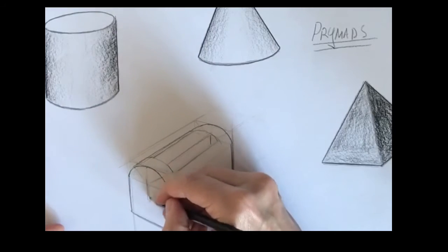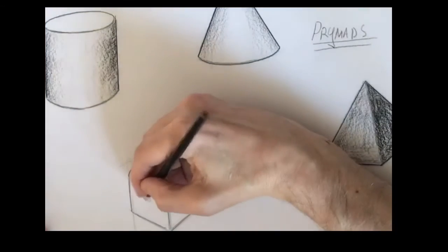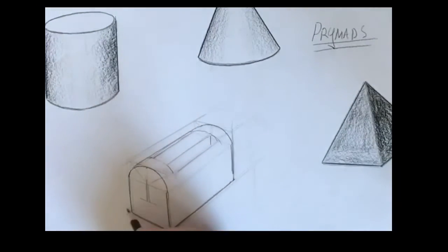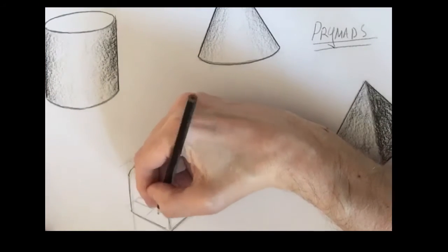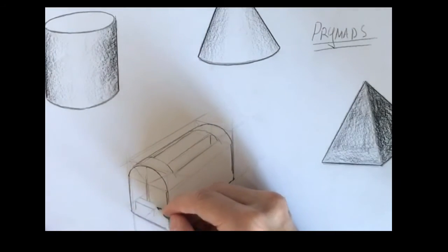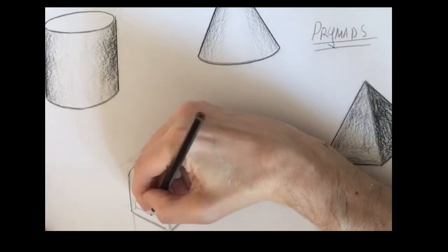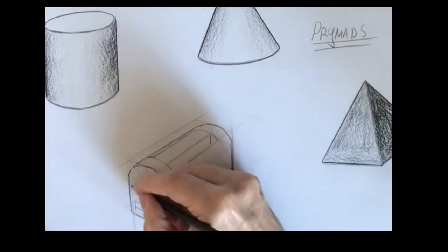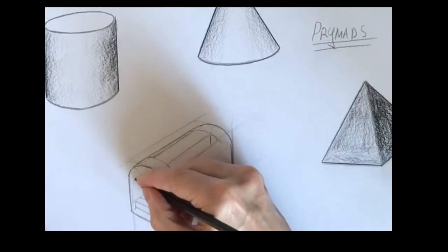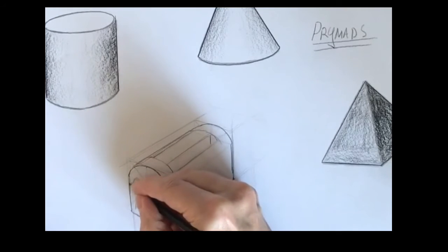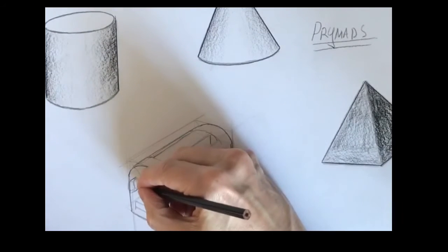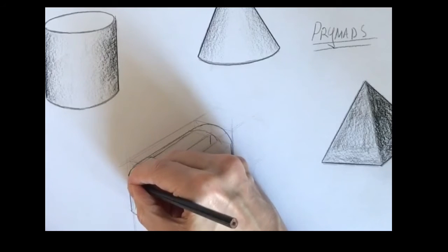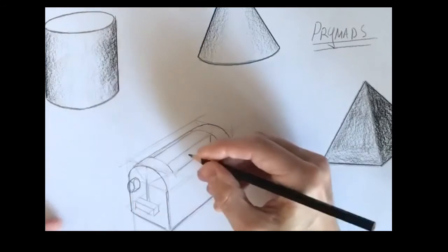Then on the end here I'm going to draw the handle that you would push down on to get the toaster to switch on. That's basically just a box drawn at the end here using the diamond method and then I'm going to have a round dial on this end as well. I've just drawn two oval shapes and I've joined these together to create this round dial as it would appear on the end of this 3D drawing.